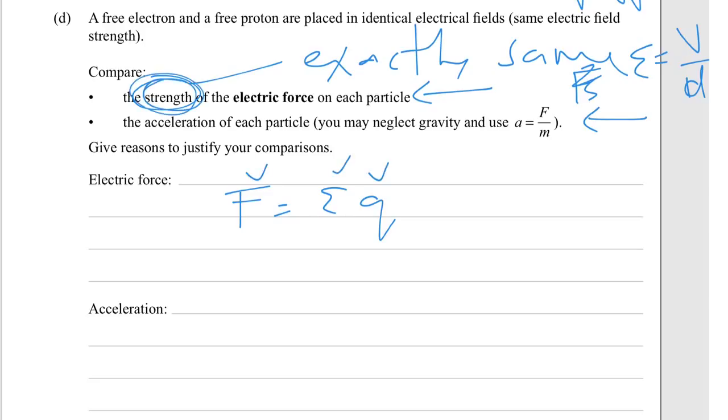So remember this is the strength, not the direction. So obviously the direction is going to be opposite. If we then look at the acceleration of each particle, we're going to say that if the mass is the same—which they're not—if the mass were the same, the acceleration would be the same. Not the same if M same.